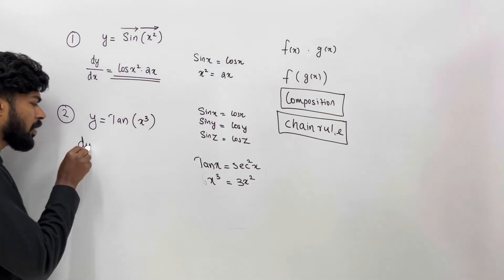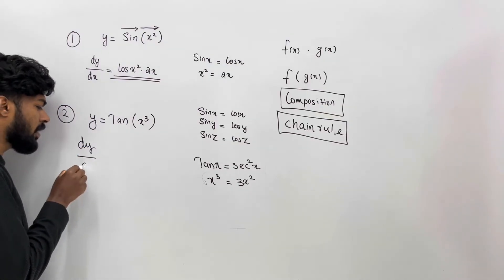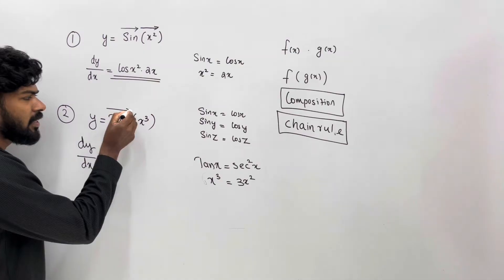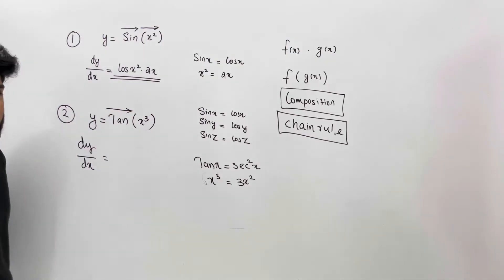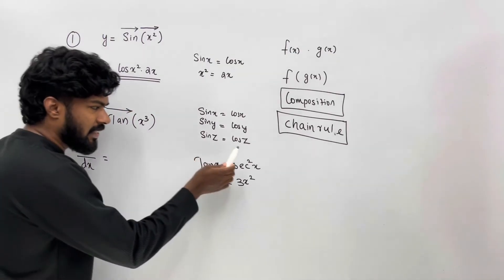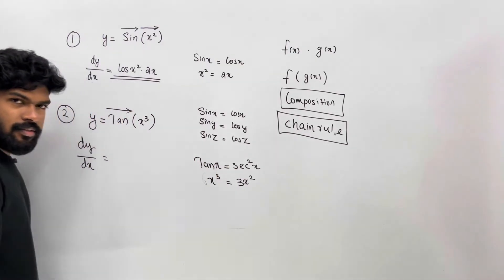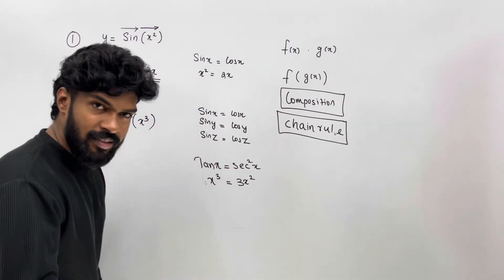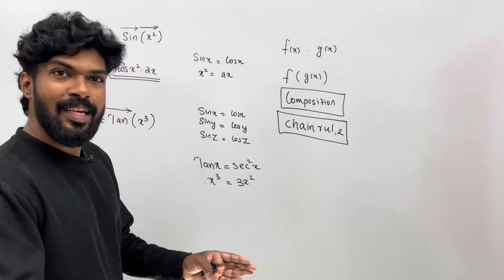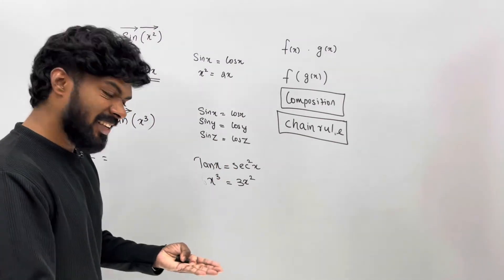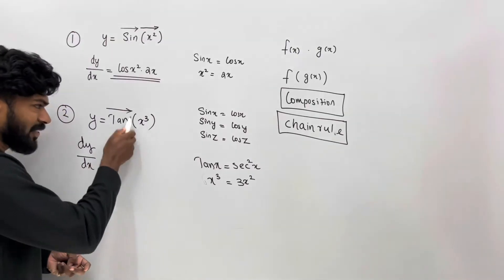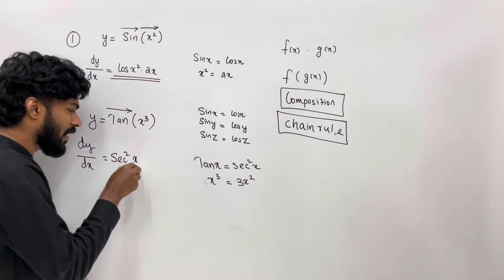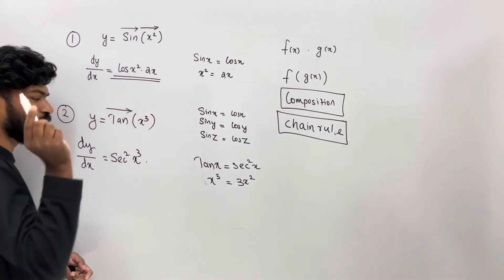Let's take the derivative: dy/dx equals tan. Tan x — the derivative is sec²(x). Tan of x cubed — the derivative is sec²(x cubed) times 3x².